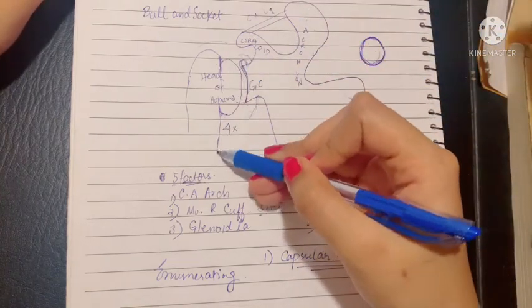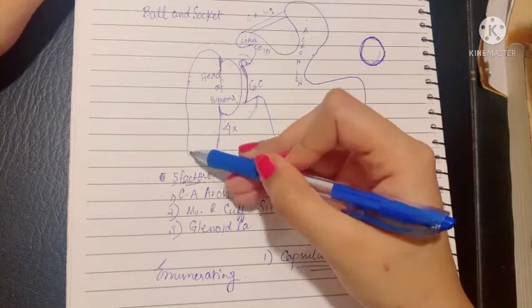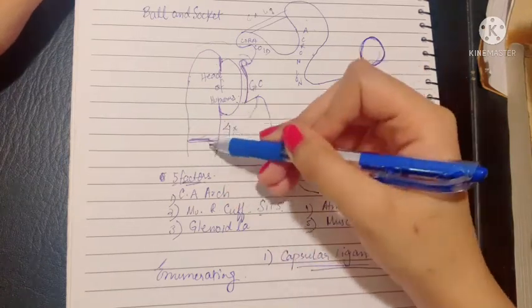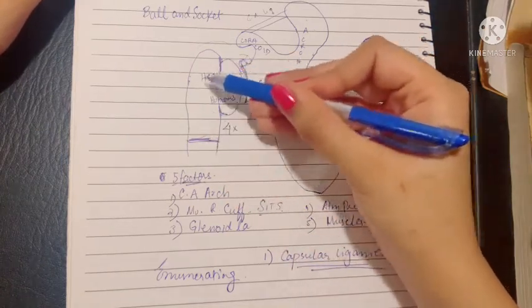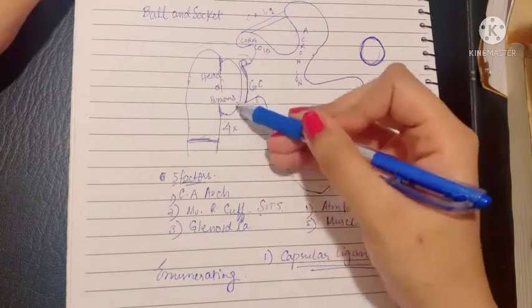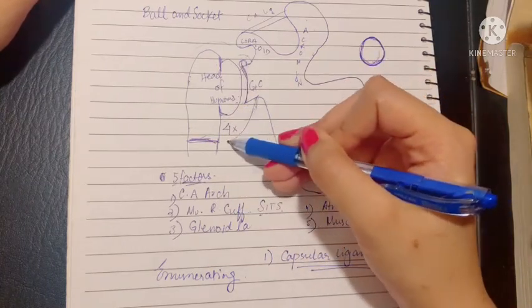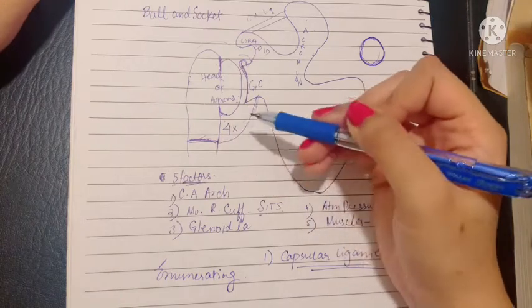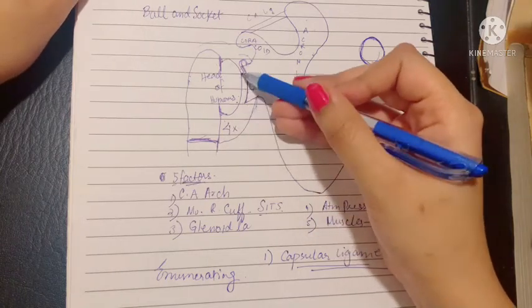However, the capsular ligament inferiorly extends till the surgical neck of the humerus. We all knew that the surgical neck was separating the upper end from the rest of the shaft. So inferiorly, this capsular ligament goes down up to the surgical neck of the humerus. This allows mobility of the joint.